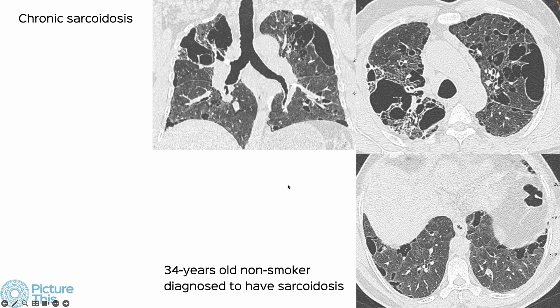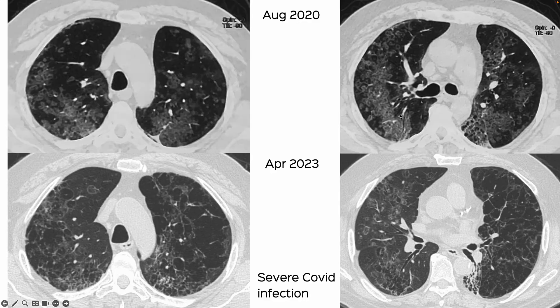Sarcoidosis, especially chronic fibrotic sarcoid, tends to present with architectural distortion and some element of cystic disease, with upper and mid-zone predominance in extreme forms. Again, either you need a history, earlier scans, or a known prior diagnosis to convincingly say that this cystic disease is related to sarcoid.